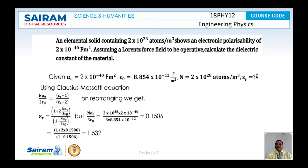What is the value of εᵣ? According to the Clausius-Mossotti relation, the formula is: nαₑ/(3ε₀) = (εᵣ − 1)/(εᵣ + 2). Rearranging, εᵣ = [1 + 2nαₑ/(3ε₀)] / [1 − nαₑ/(3ε₀)]. The value of nαₑ/(3ε₀) is calculated as 0.1506. Substituting, εᵣ = 1.532.